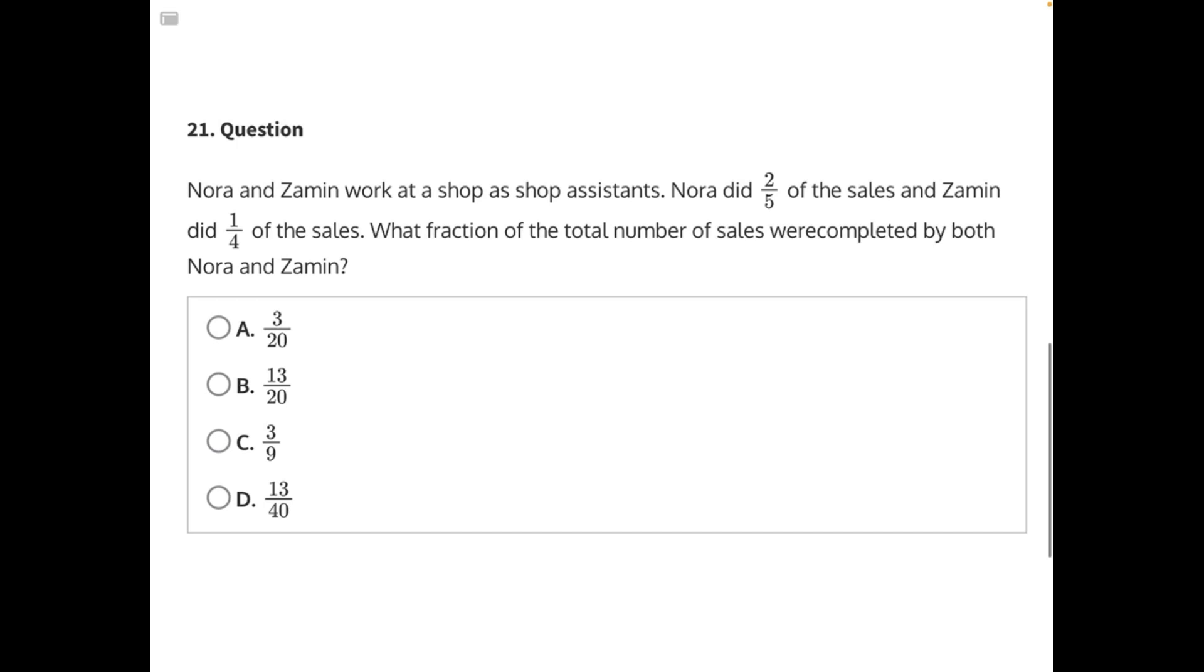Nora and Zamen work at a shop as shop assistants. Nora did two-fifths of the sales and Zamen did one-fourth of the sales. What fraction of the total number of sales were completed by both Nora and Zamen?